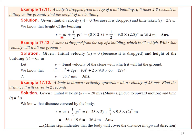Problem: A stone is dropped from the top of a building 65 meters high. With what velocity will it hit the ground? Since it is dropped, u = 0. Using v² = u² + 2gs, substituting u = 0, g = 9.8, s = 65 m, we get the final velocity as 35.7 m/s.